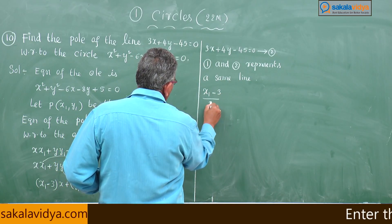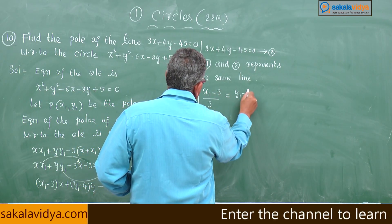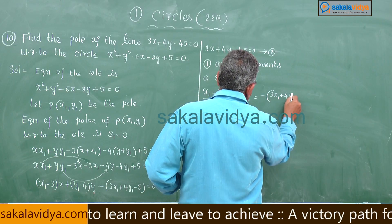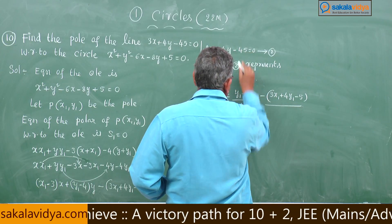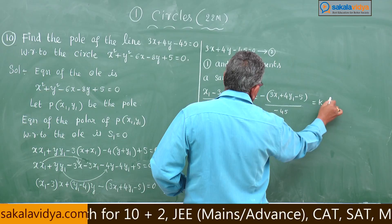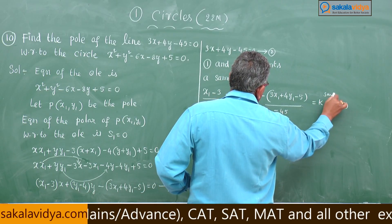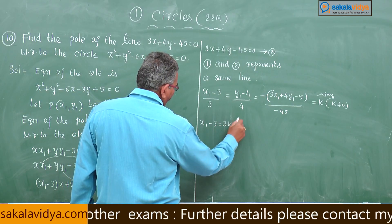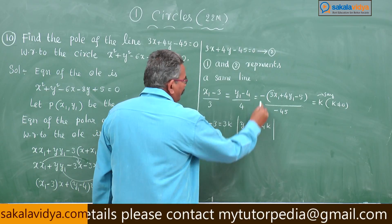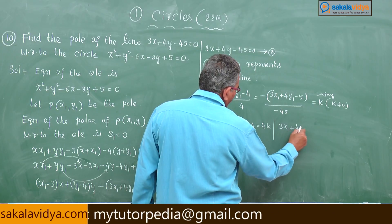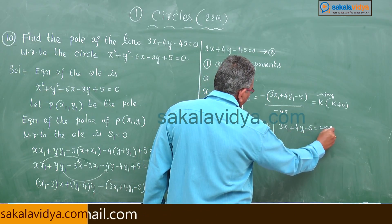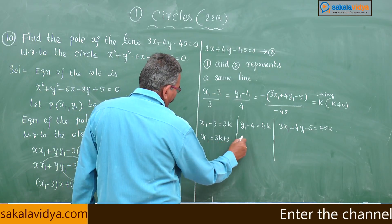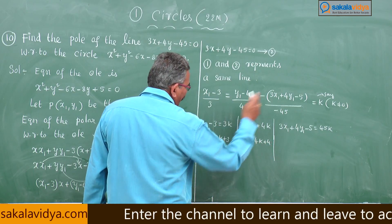So: (x1 - 3)/3 = (y1 - 4)/4 = -(3x1 + 4y1 - 5)/(-45) = k. Therefore: x1 - 3 = 3k, so x1 = 3k + 3; and y1 - 4 = 4k, so y1 = 4k + 4. Substitute these values into 3x1 + 4y1 - 5 = 45k.